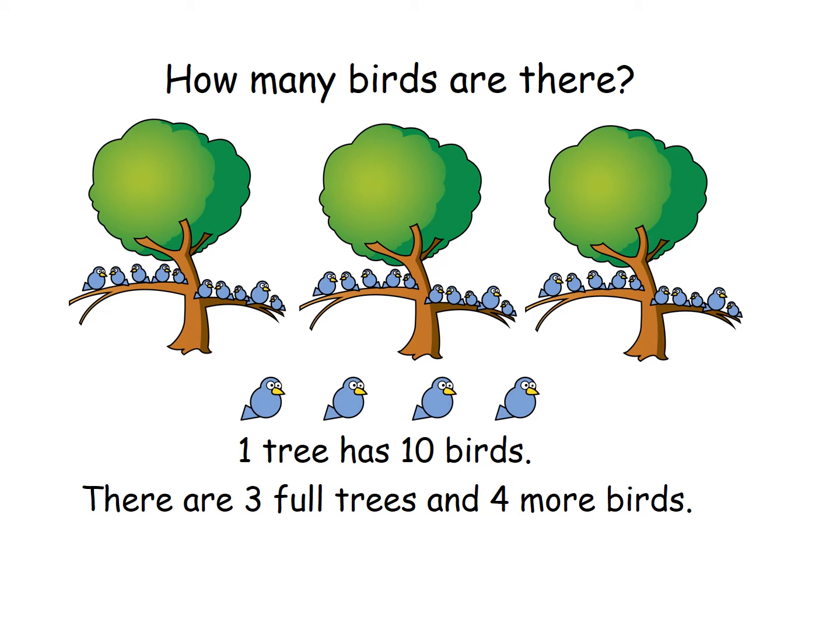There are four. So you've got three full trees, and so three tens and four more. Anybody know what three tens and four more makes? What number? Well done if you said 34. There are 34 birds.